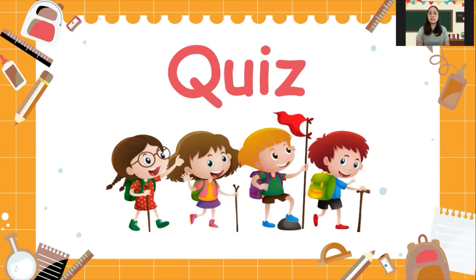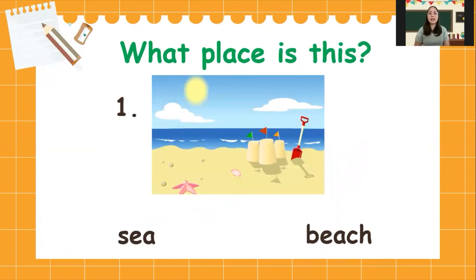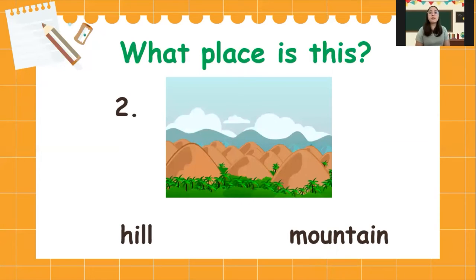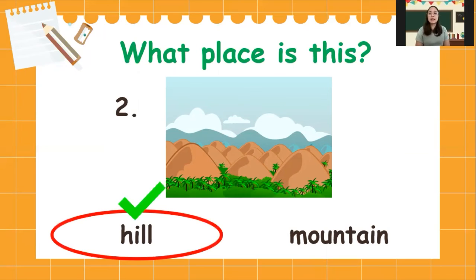So now, let us have a quiz. We're going to answer the question: what place is this? Number one, what place is this? Is it sea or beach? The answer is beach. Very good. Number two, what place is this? Is it hill or mountain? The answer is hill. Very good.